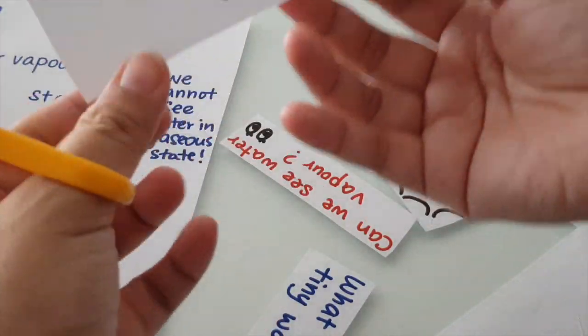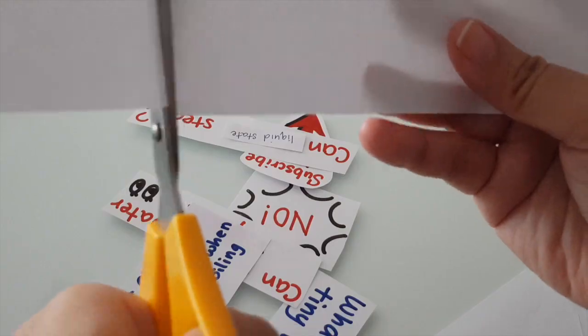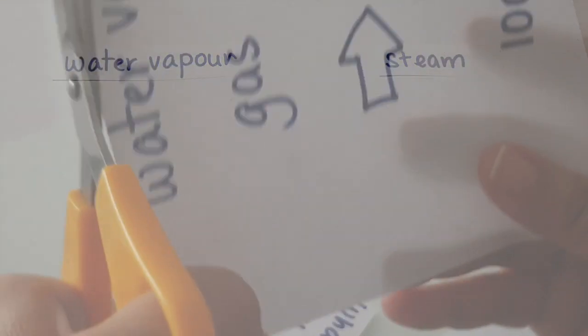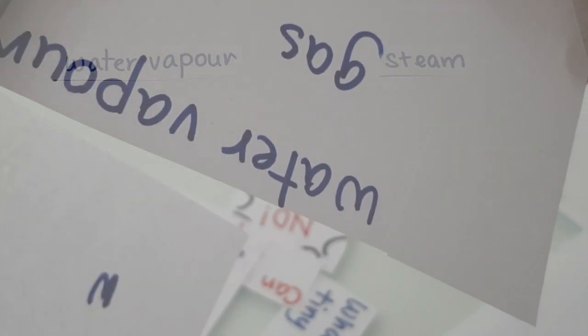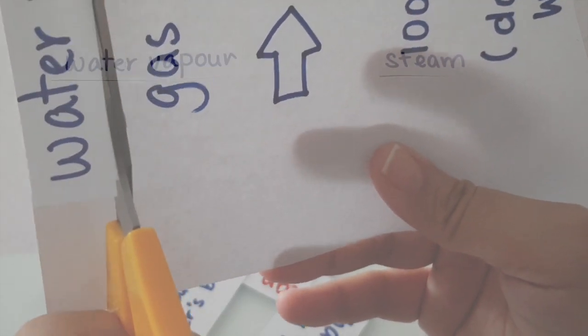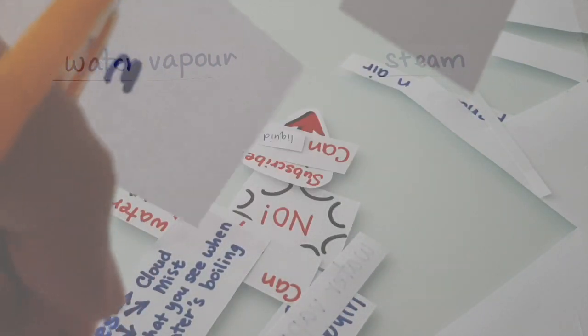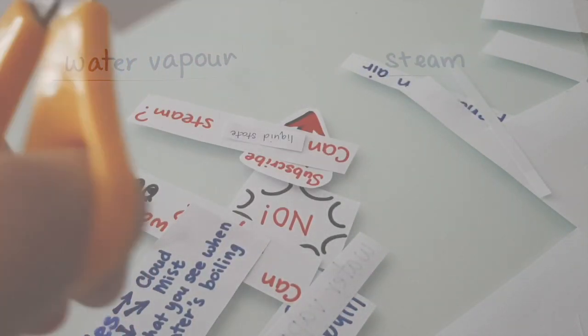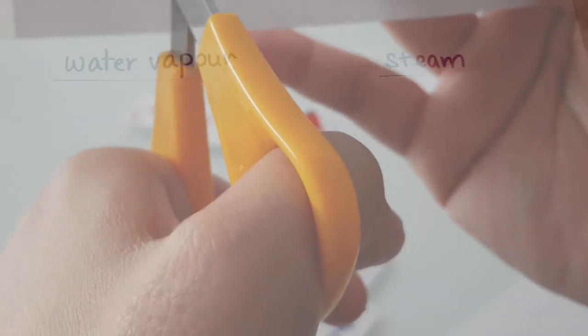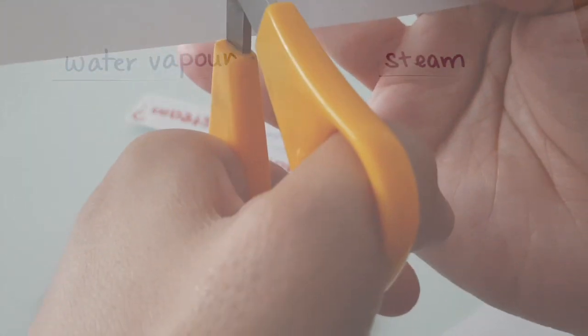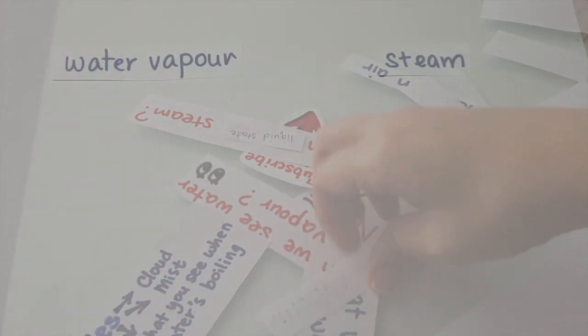For all P5 and P6 students who have learned about the water cycle in upper block science textbook but find it very difficult to answer questions on this topic, it is very important that you watch this video and clear all your misconceptions first.